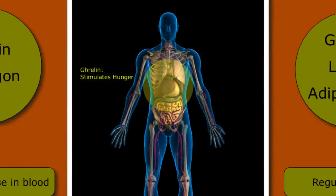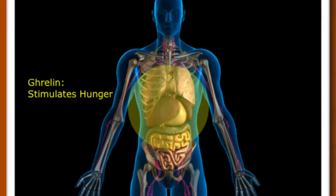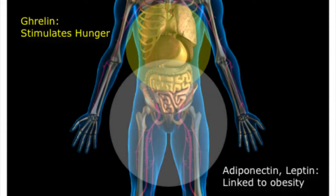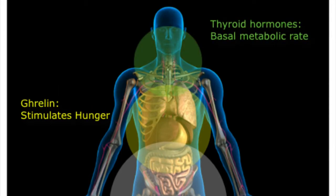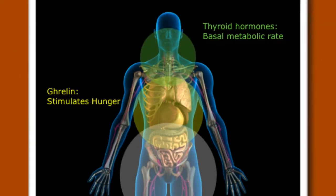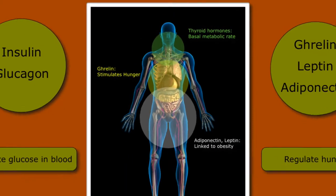Ghrelin is produced by your stomach and stimulates hunger. Leptin and adiponectin are produced in fat. High levels of leptin are linked with obesity. In contrast, adiponectin works the opposite way — low levels of adiponectin are linked with obesity. Thyroid hormones set your basal metabolic rate, which is another way of saying it establishes how many calories you burn at rest.